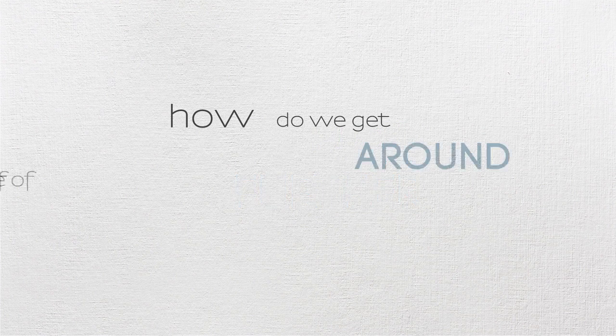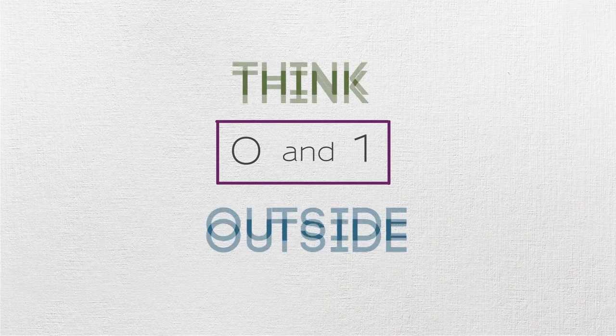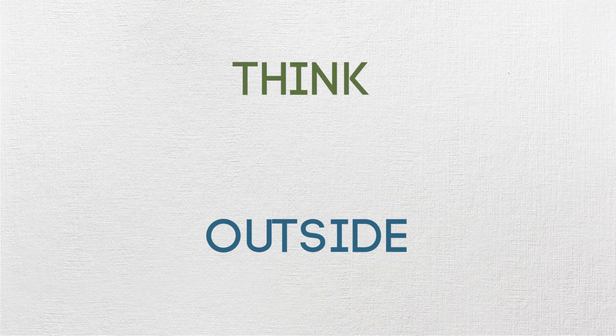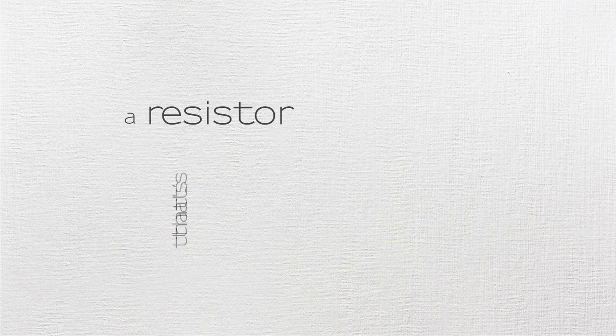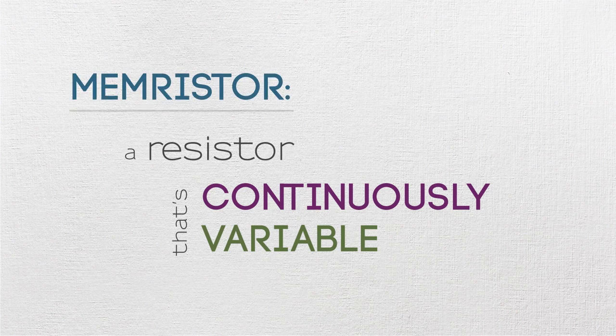So how do you get around something like that? One way is to think outside of zero and one. Maybe memory is the resistance value. What if you can make a resistor that's continuously variable? We've got this new device that can be a new memory with all these states available. Let's use it differently. And that's where people like Alex are going — thinking completely different platforms and different ideas.